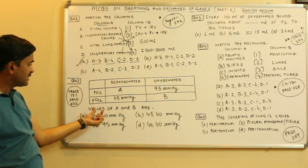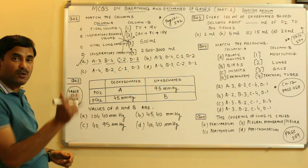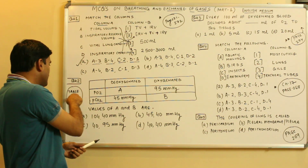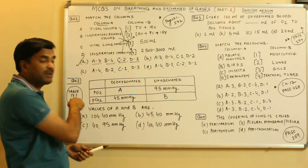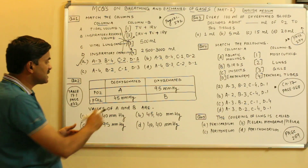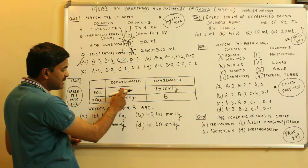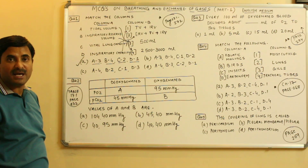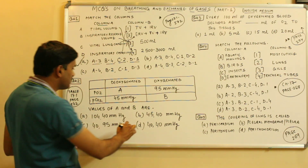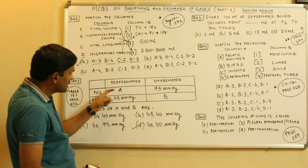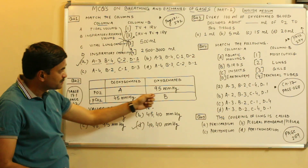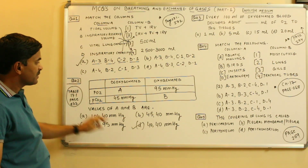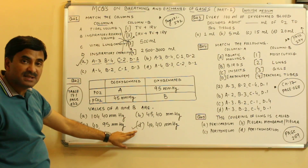You have to choose the values of A and B. If you see table 17.1 on page number 272 of NCERT, you will see that here it is 40 mmHg and here also it is 40 mmHg. So the answer must be D — 40 mmHg for both. Question number two answer is D.